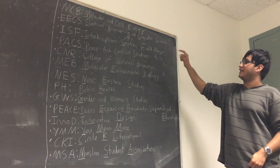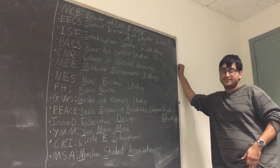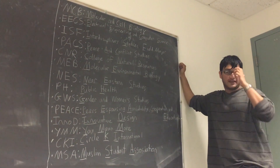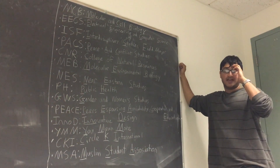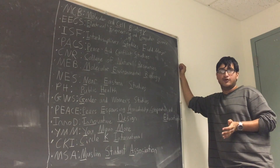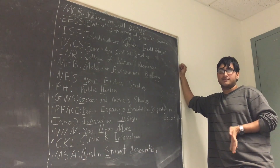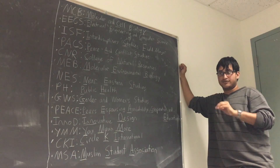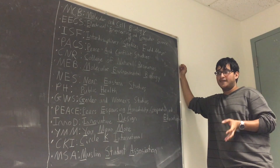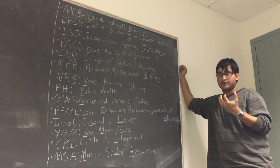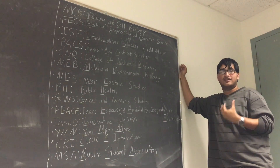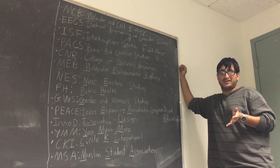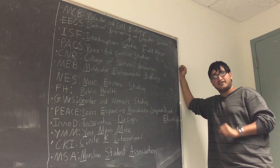EECS is Electrical Engineering and Computer Science. This is in the College of Engineering and is basically the engineering version of CS, focusing on not only computer science, software engineering, and programming, but also more technical hardware and electrical engineering aspects — although most students tend to fall on the CS side of it.